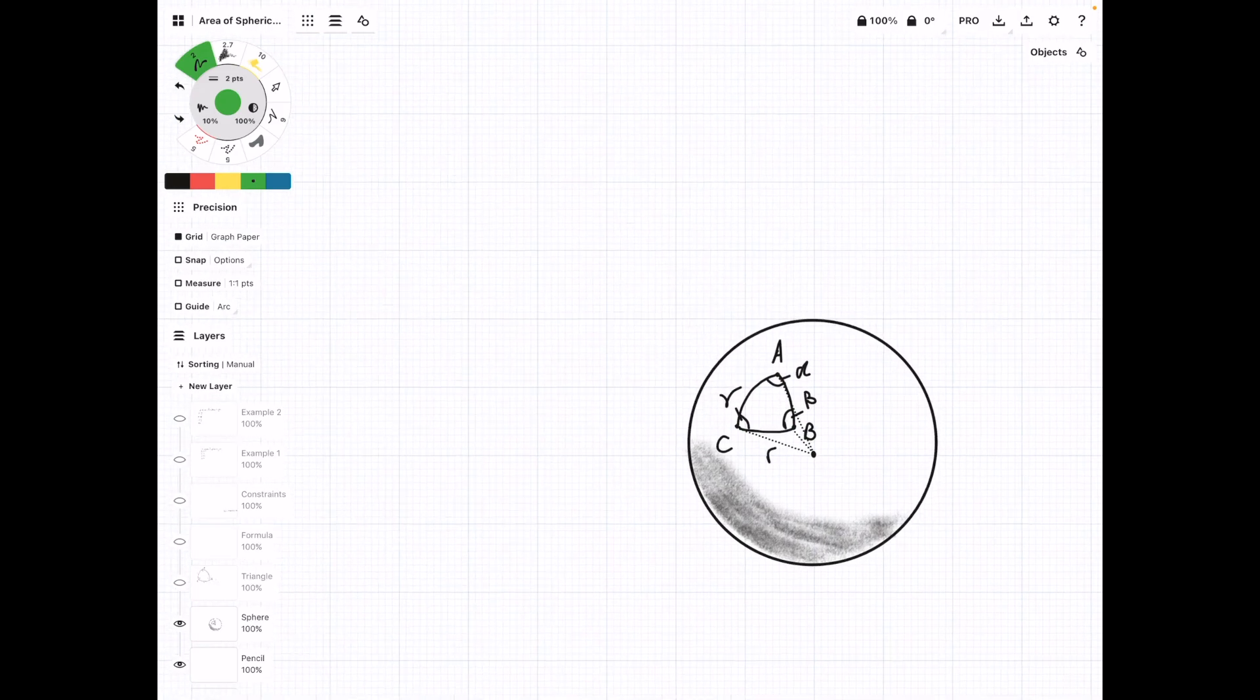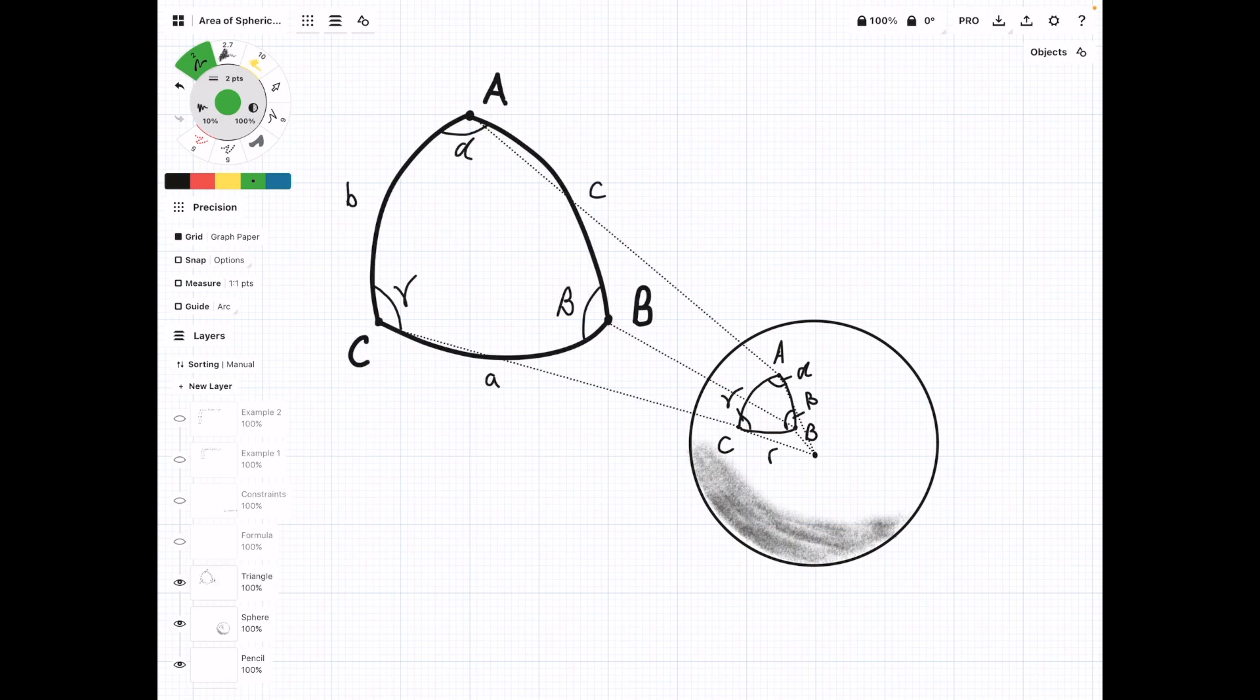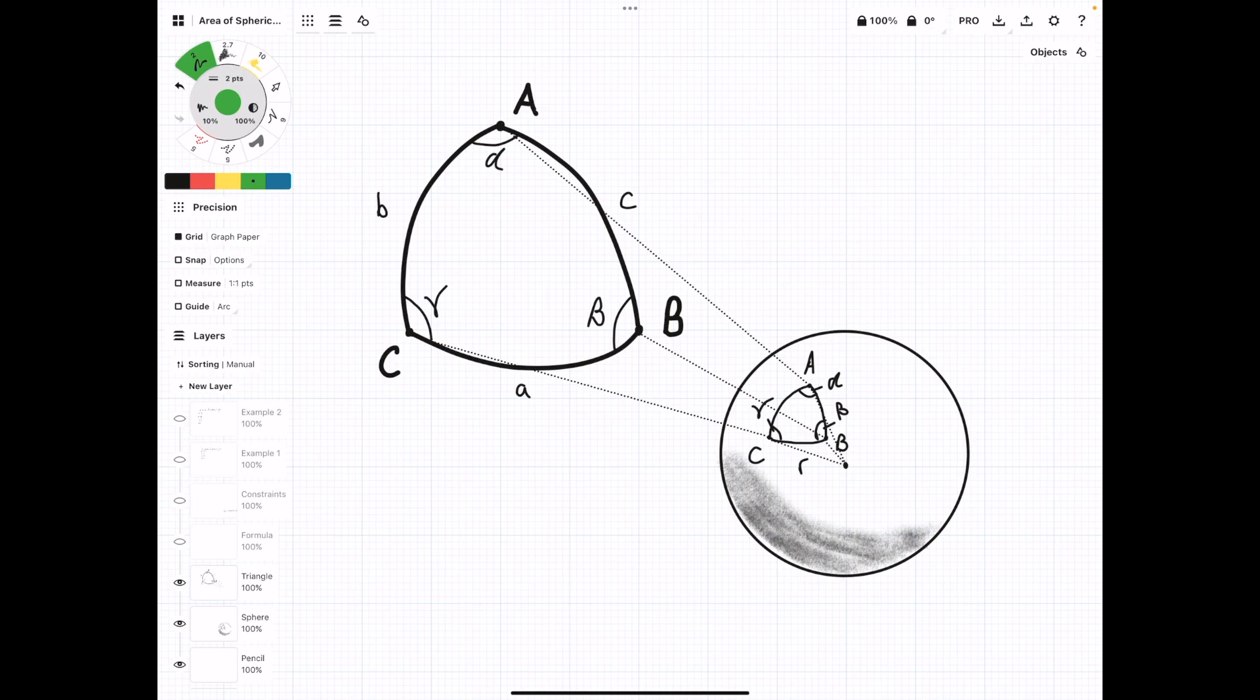Now, if we pull this triangle off of the sphere, we can look at it a little bit closer, and we'll notice that the sides are not straight. Unlike a planar triangle, we can't find the area using one-half base times the height, because if we drew a line straight across, we realize that there's a lot of extra stuff going on out here.